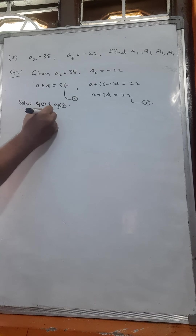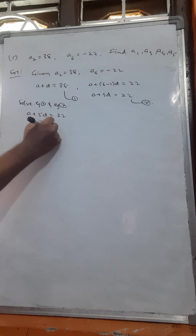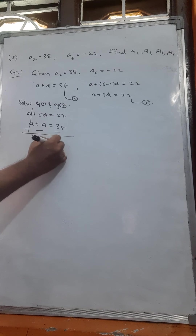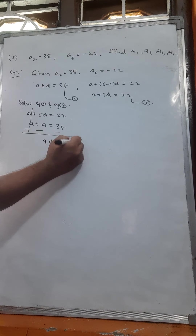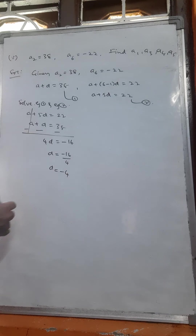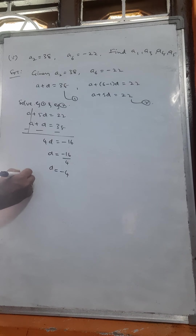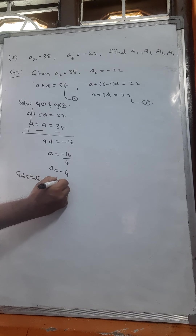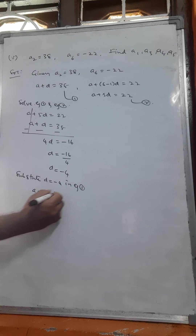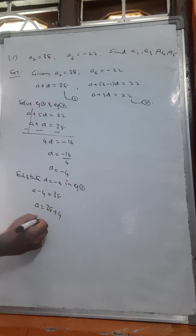a plus 5d is equal to minus 22, a plus d is equal to 38. Subtracting: 5d minus d is 4d, and 4d is equal to minus 16, so d is equal to minus 4. Substitute d equals minus 4 in equation number 1: a minus 4 is equal to 38, so a is equal to 42.